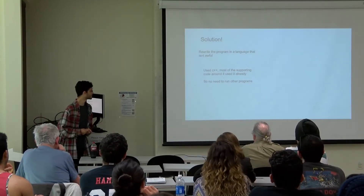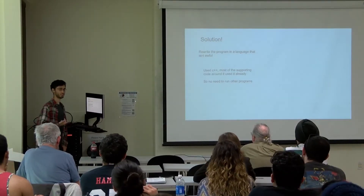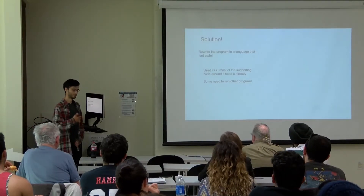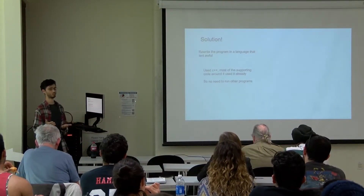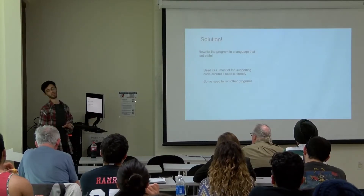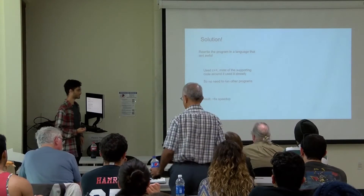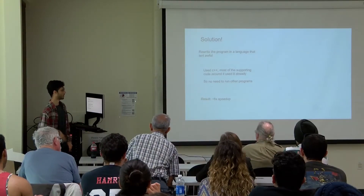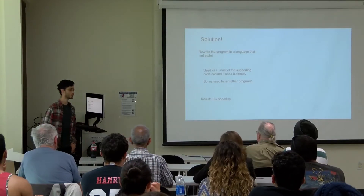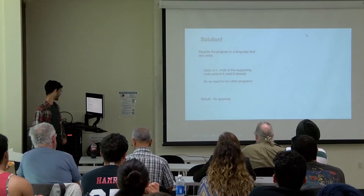A lot of the code we were using around this used C++ anyway, which is why I used it. A lot of what the program we were shelling out to was C++, so instead of just calling the program, I just linked those functions into my code. The ending result is, using four threads on my home system, I got about a six times speed up — better than just multiprocessing it. And that's it.